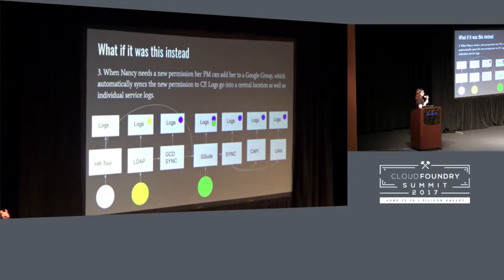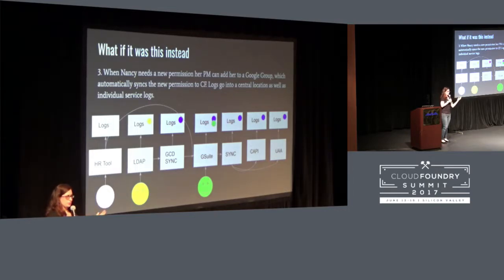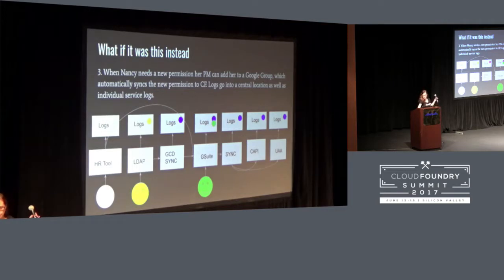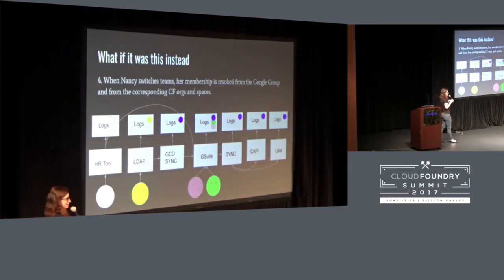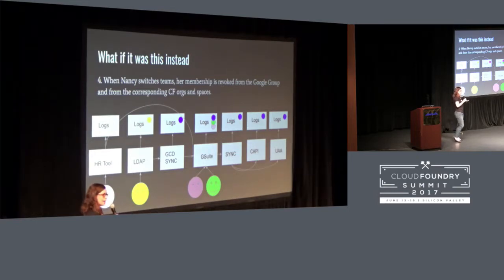When permissions need to be updated, you don't have to go into the individual systems. Nancy's PM can just add her to a new Google Group and that'll take the same set of actions to add her to the appropriate orgs and spaces or give her the appropriate permissions in CAPI or UAA or both. And when Nancy switches teams, her PM removes her from the Google Groups that corresponded to her old team, and that propagates the permission removal so that only the people who are supposed to have access to those orgs and spaces are the ones that do.